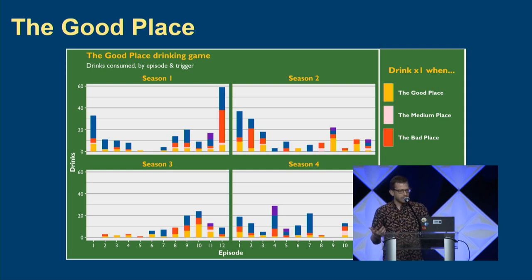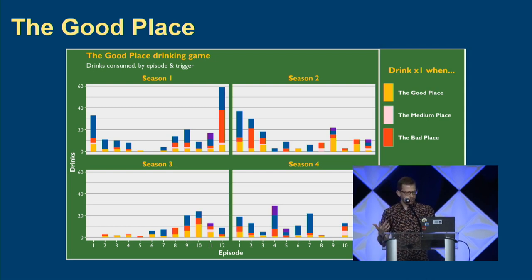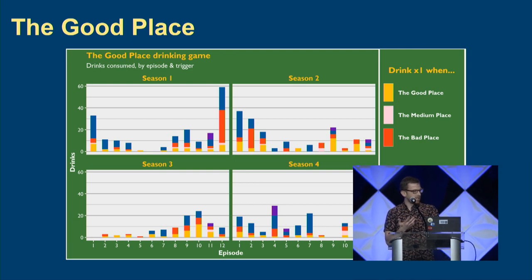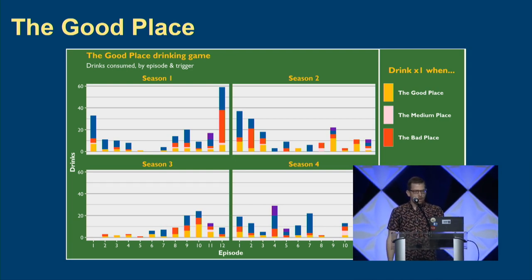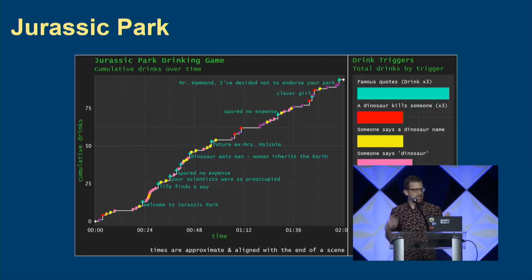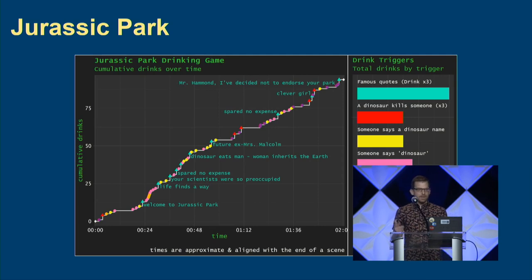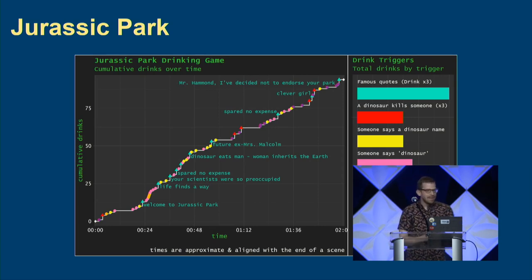Here, you drink every time Eleanor says 'fork,' or Janet reminds someone that she's not a girl. And here, you're going to watch season one. Or the Jurassic Park drinking game — literally any drinking game, you give me the TV show or movie and I'll solve it for you using Tidy Text. We now know that if you watch the two-hour movie, you're going to consume 80 drinks during the course of that movie.